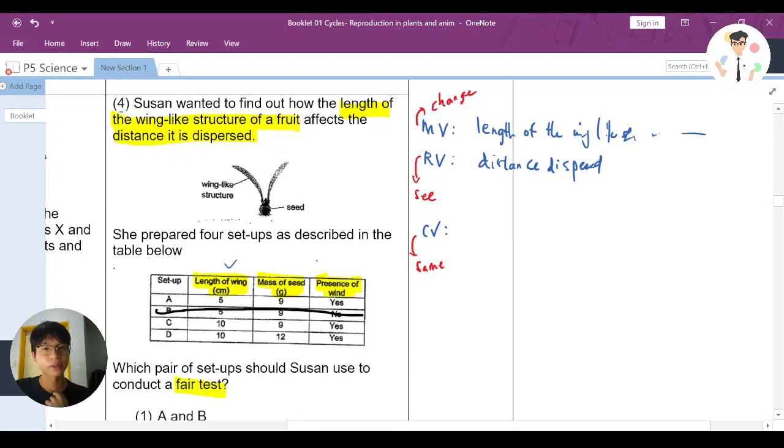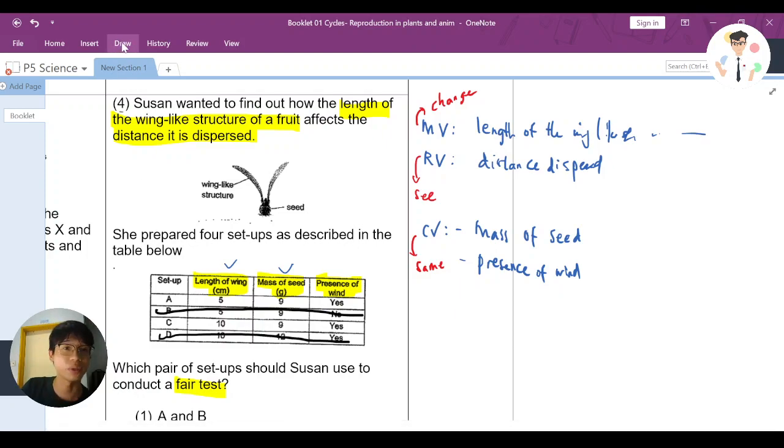Now the next part: length of the wing, mass of the seed. Since we are testing the length of the wing, the mass of the seed is supposed to be the constant variable, right? It's supposed to be the same. Because otherwise how can we actually test? One heavy, one not that heavy, it affects the test. And actually the same thing also for the presence of the wind, is supposed to be the same. Because we are now only testing the length, presence of the wing. That's why these two are put under the constant variable category. So mass of the seed is supposed to be the same, so we need to cut down also D. It's kind of obvious already. B and D is removed.